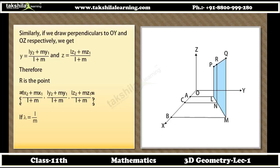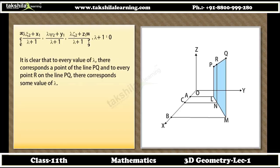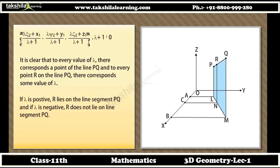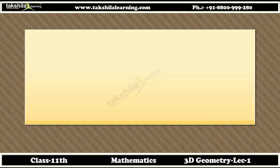If λ = L/M, then the coordinates of point R which divides PQ in the ratio λ:1 are: [(λX2 + X1)/(λ + 1), (λY2 + Y1)/(λ + 1), (λZ2 + Z1)/(λ + 1)], where λ + 1 ≠ 0. To every value of λ there corresponds a point on line PQ, and to every point R on line PQ there corresponds some value of λ. If λ is positive, R lies on segment PQ; if λ is negative, R divides PQ externally.